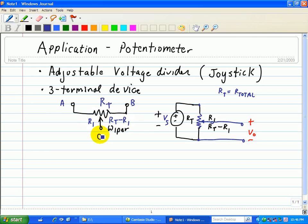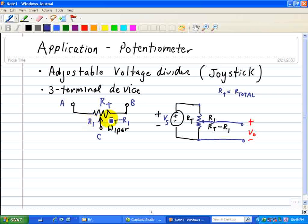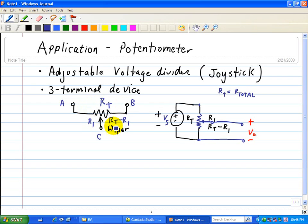So between node C and B is RT minus R1, and between node A and C is just R1. And when you add these up, it results in the total resistance between A and B.